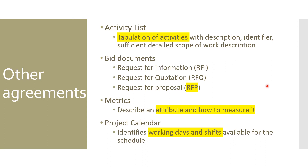The metrics artifact talks about different metrics to be evaluated in a project — for example, schedule variance and cost variance in predictive methods, or velocity and sprint goal achievement in agile. It describes the attribute you're going to measure, how you're going to measure it, and what formula or mathematics you'll use.